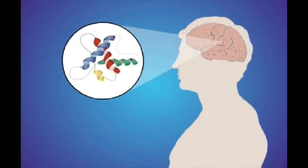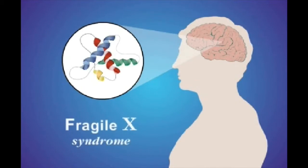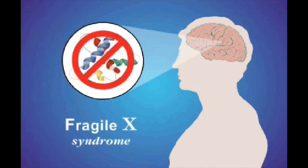FMR1 is found in every cell in the body, and the protein it makes is essential for brain development. If there is a mutation of the gene, then it makes too little or no FMRP, and thus the brain does not develop properly.